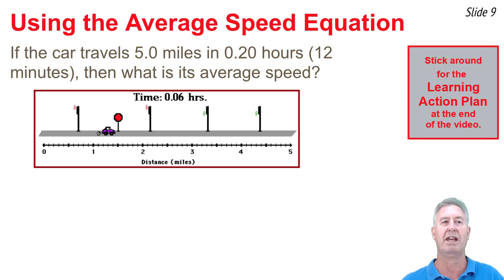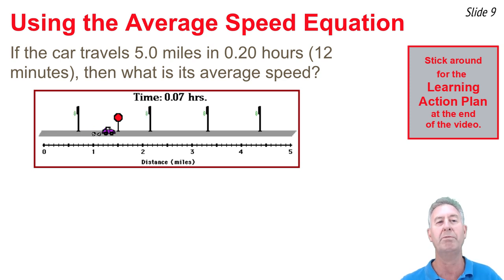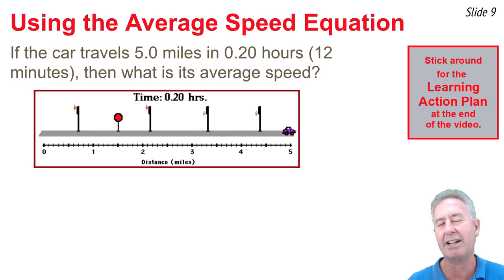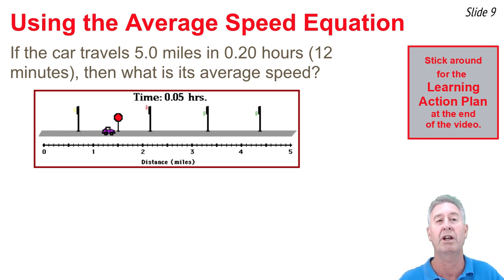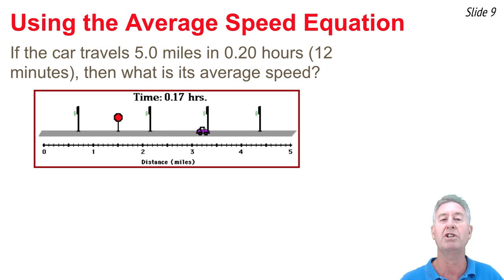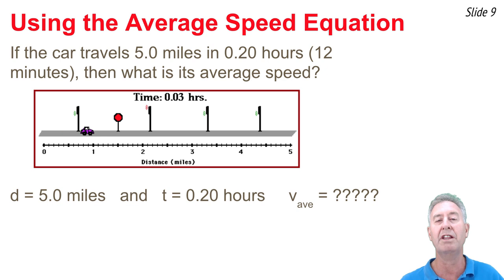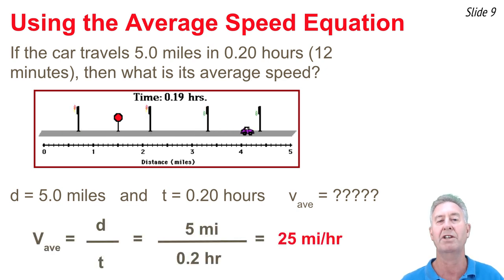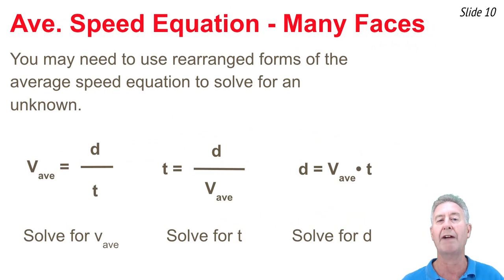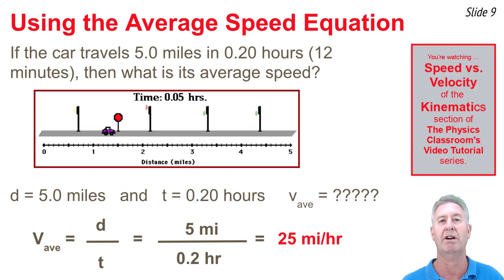Here's an example using the average speed equation. We see a car moving along a path for about 12 minutes, stopping and starting repeatedly. There were times when the instantaneous speed was maybe 50 miles per hour and other times it was zero. But when we calculate the average speed, we're averaging all those instantaneous values. This car traveled 5 miles in 12 minutes, or 0.2 hours. Taking the distance of 5 miles divided by 0.2 hours gives us an average speed of 25 miles per hour.